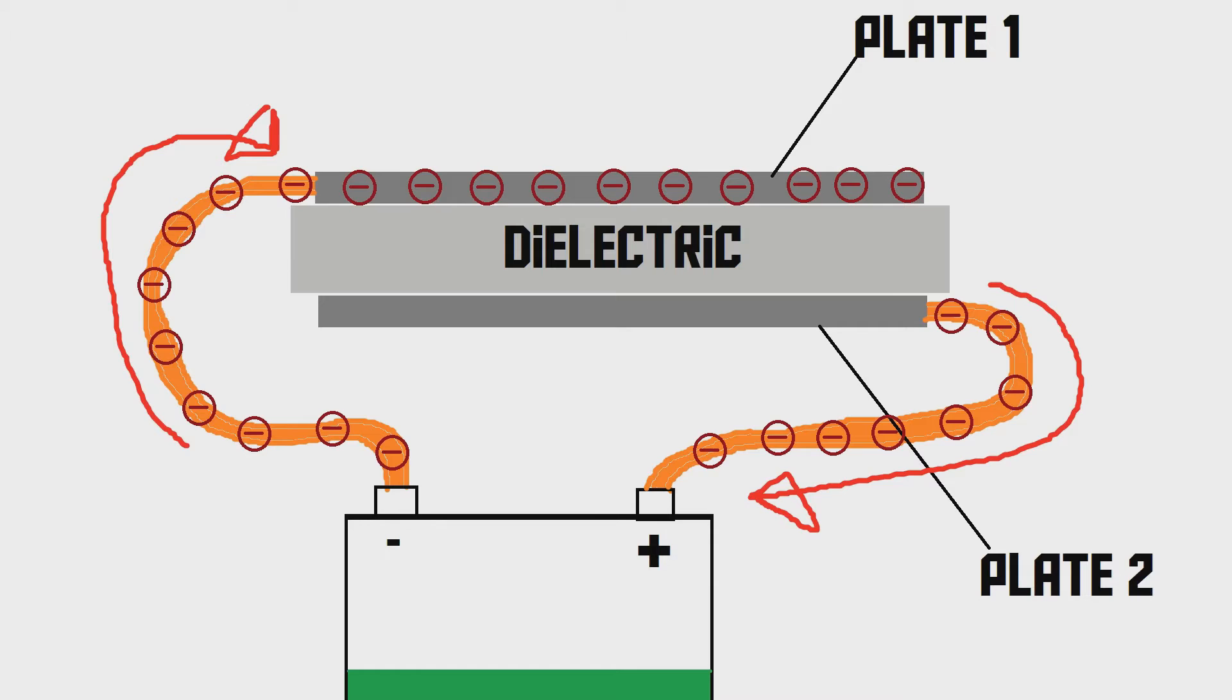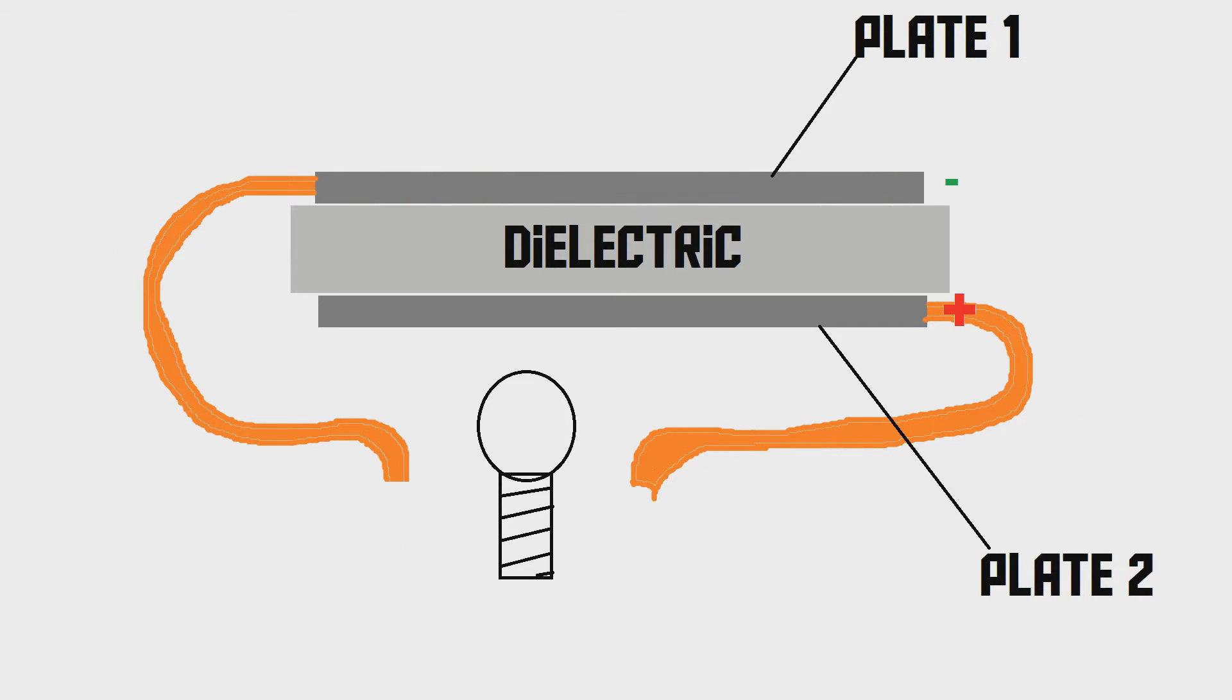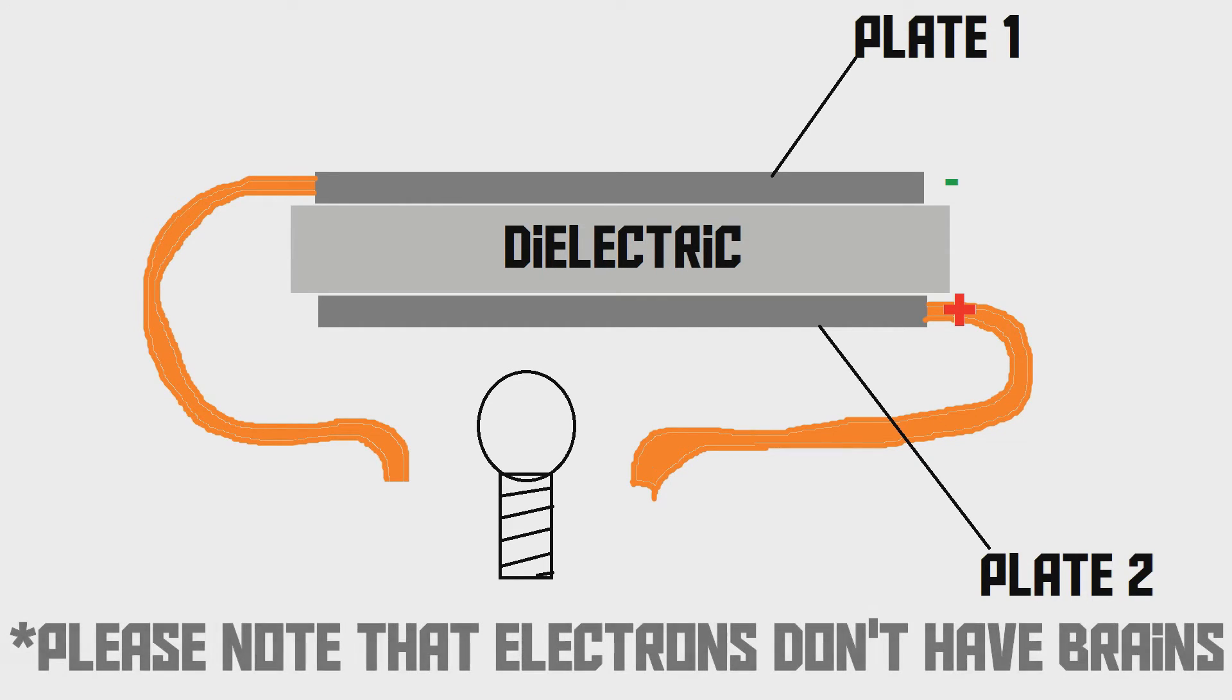After charging the capacitor, this is what the situation looks like. We've got plate one with a negative charge, and plate two with a positive charge. Inside plate two, there are almost no electrons. There is lots of space. And in plate one, the negatively charged plate, the electrons are crammed together. There are too many of them. And, of course, negative attracts positive, and vice versa. So, the electrons desperately want to go to plate number two. They desperately want to go to the positive plate.